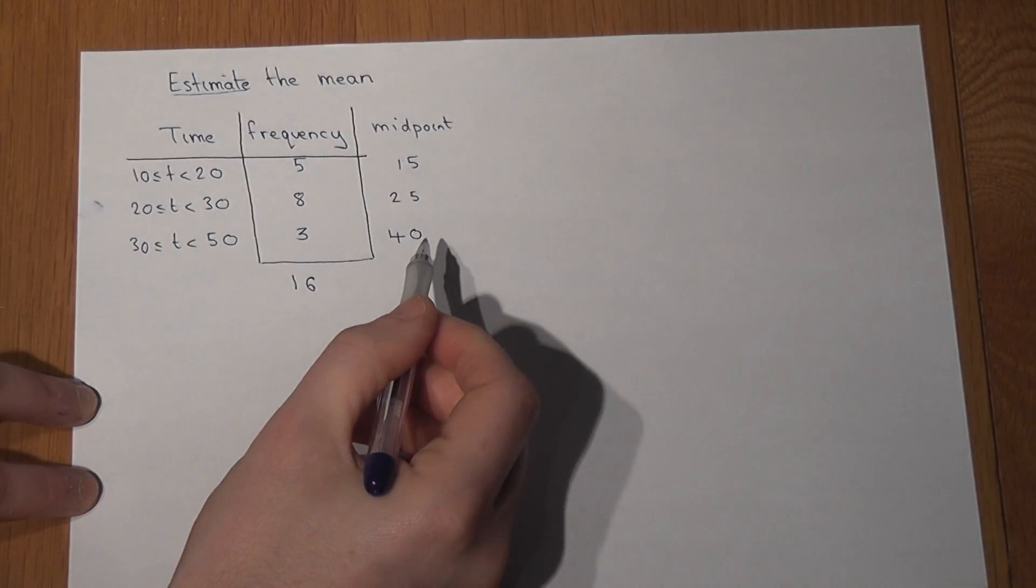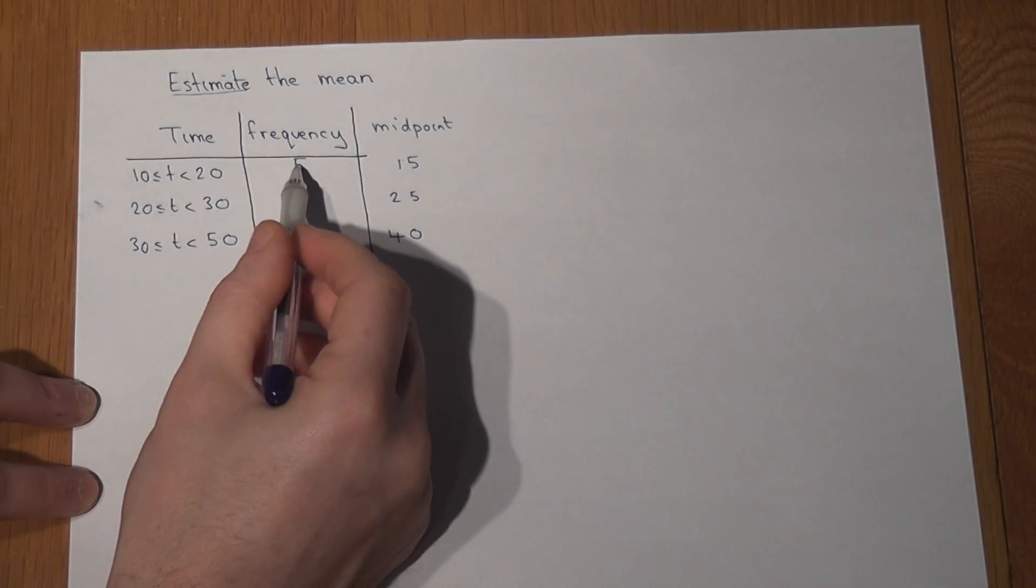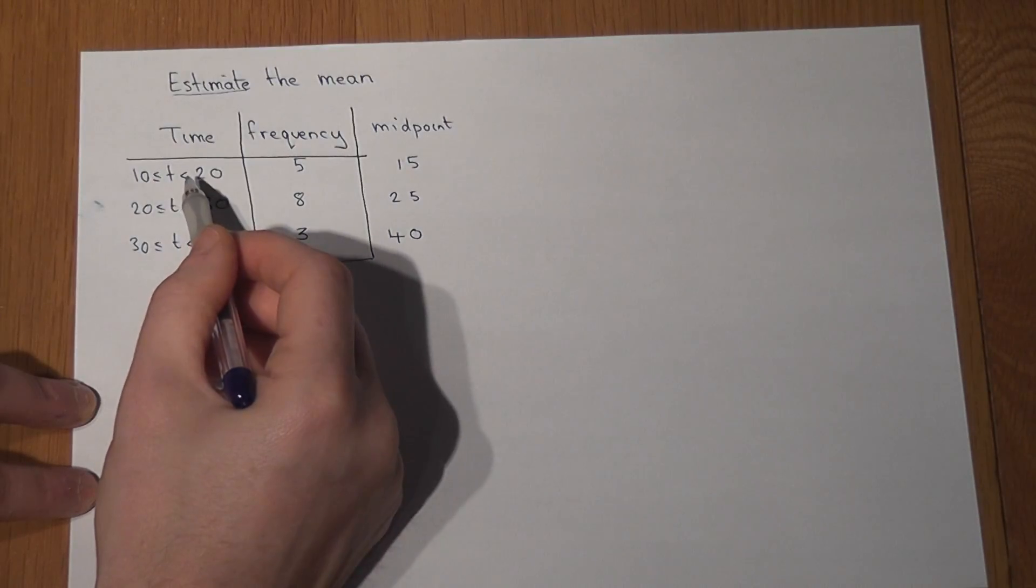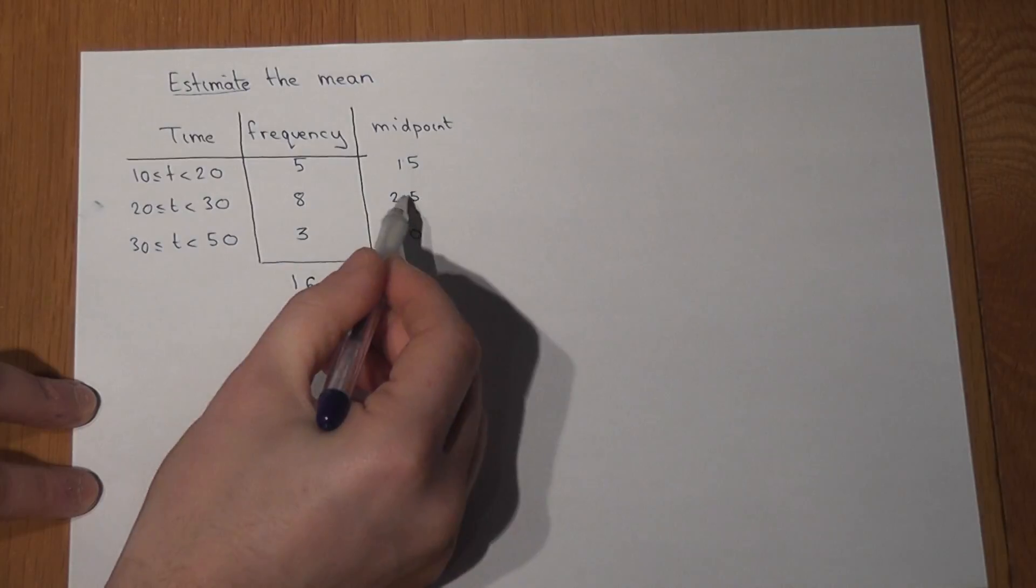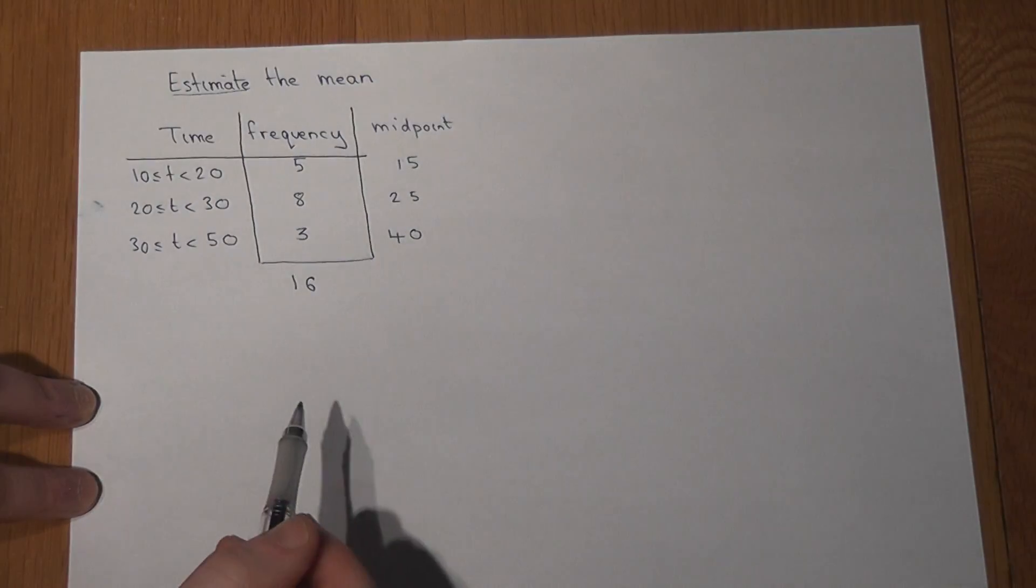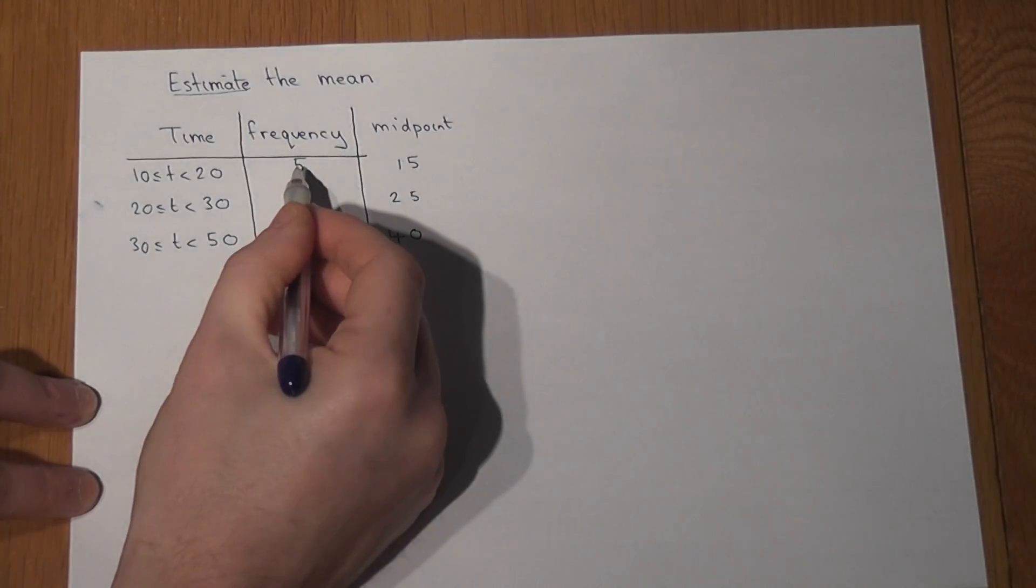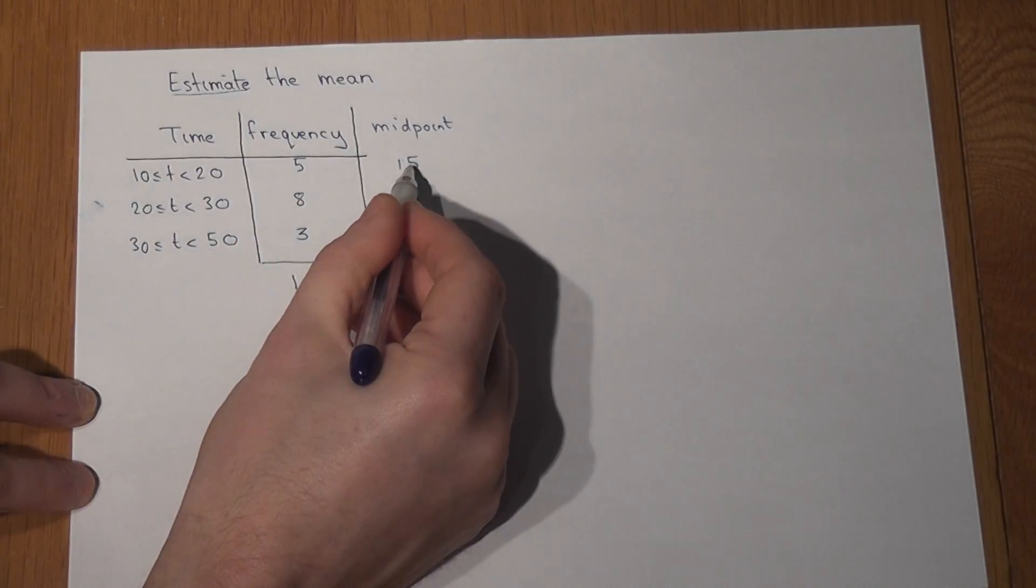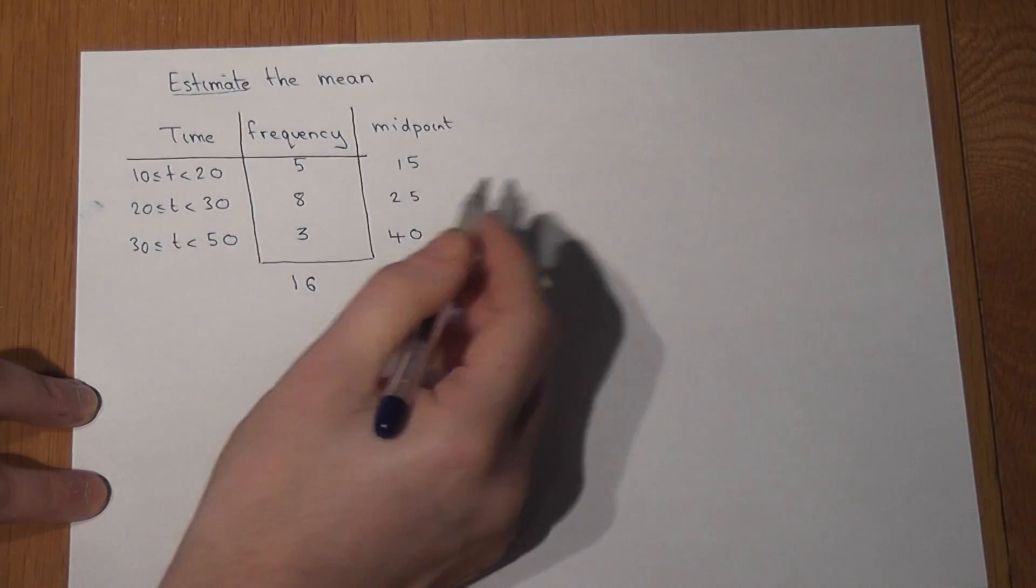This is where the estimate comes in. We believe their times are around about 15, their times are around about 25, and their times are around about 40. However, there were five people who each took around 15, so to find their total time we do frequency times by midpoint.